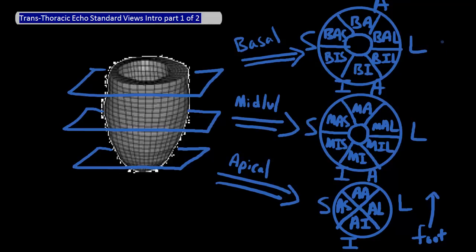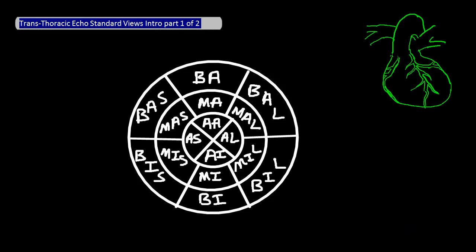So from the basal cut, we have six different parts of the left ventricle. For the mid-level cut, we have six parts of the left ventricle. And from the apical cut, we have four parts of the left ventricle for a total of 16 different parts. If you put this all together, you'll get this view, which is something that you'll see when you're looking at echo reports.